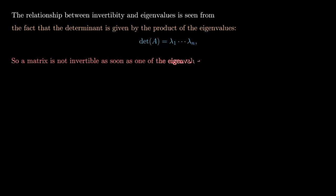Now a matrix is not invertible as soon as the determinant is 0. And so in particular, a matrix is not invertible as soon as one of the eigenvalues is 0.